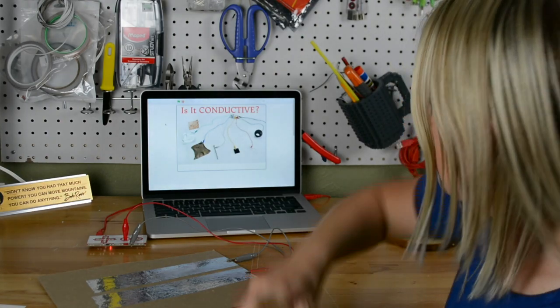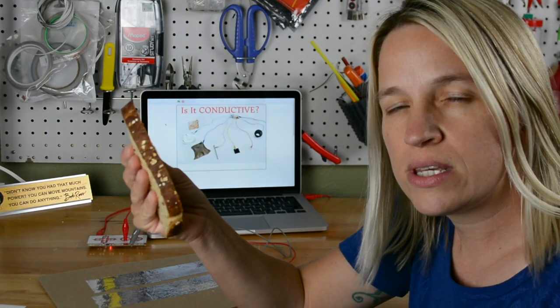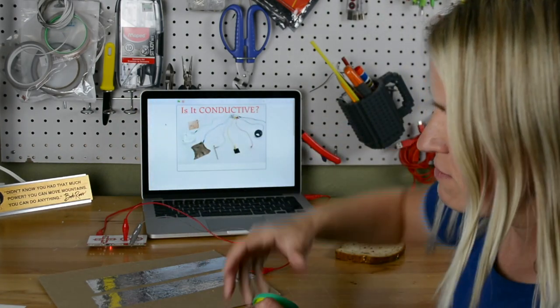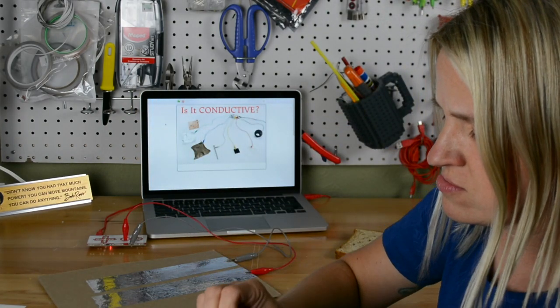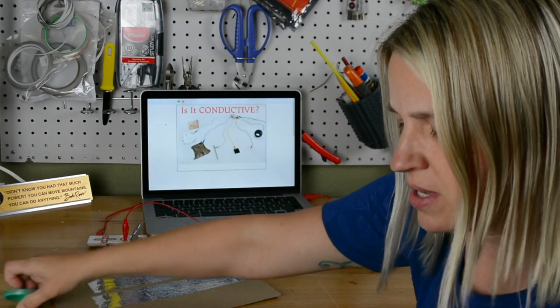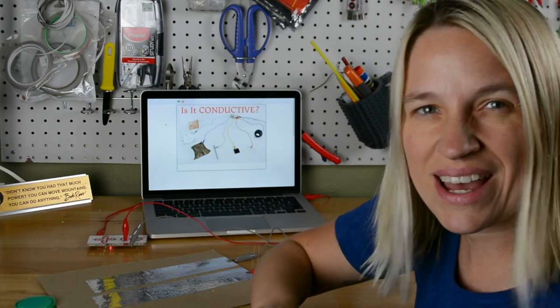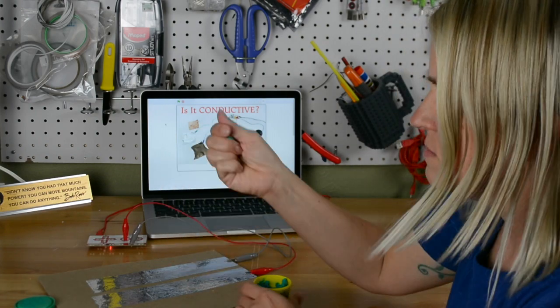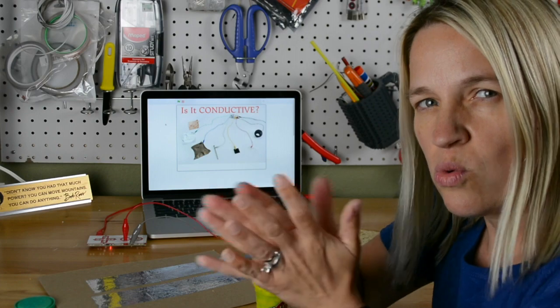I'm wondering if I toasted this bread, would it still be conductive? And if I use this play-doh, I'm pretty sure it's going to be conductive, but if it dried out would it still be conductive? What is it that's making these things conductive? Good questions, things to think about.